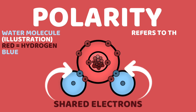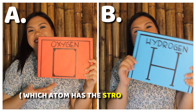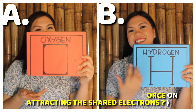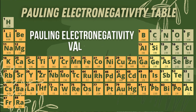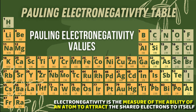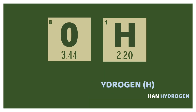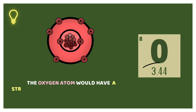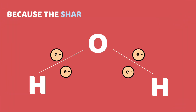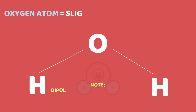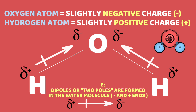Polarity refers to the unequal sharing of electrons between atoms. To determine which atom has a stronger force on attracting the shared electrons, we need to look at the electronegativity table. Here we can see that oxygen has a higher EN value than hydrogen. Thus, the oxygen atom has a stronger force on attracting the shared electrons when it bonds with hydrogen. Because the shared electrons are pulled closer to the oxygen atom, it gets a slightly negative charge, while hydrogen gets a slightly positive charge.